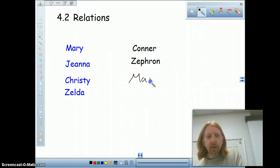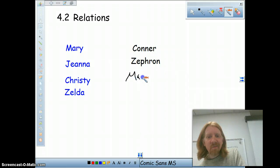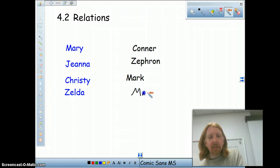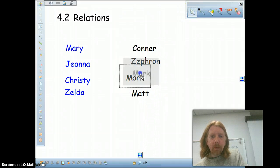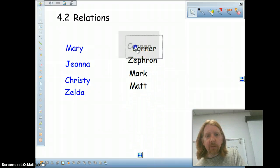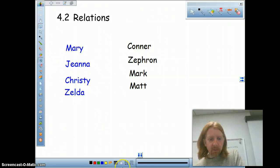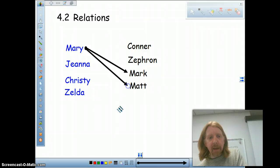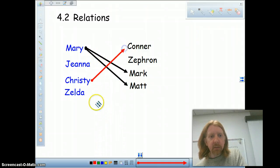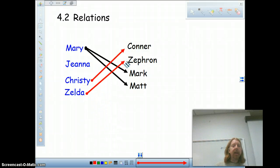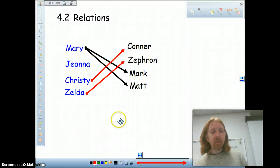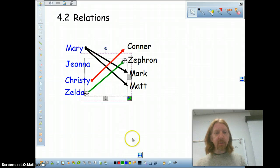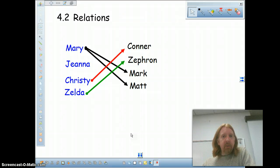And then let's put up a Mark. And then we'll put in maybe a Matt. There. Now, I'm going to tell you there's a rule that connects these two groups. And so to do that, let's get some arrows out here, and we'll connect them. We're going to say that we're going to pair Mary to Mark. And we're going to pair Mary to Matt. And we're going to pair Christy to Connor. And we're going to pair Zelda to Zephron. And in this case, Gina is not going to be paired with anybody. So there would be our relation.